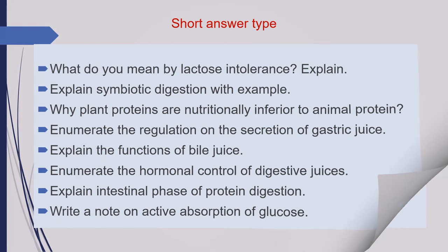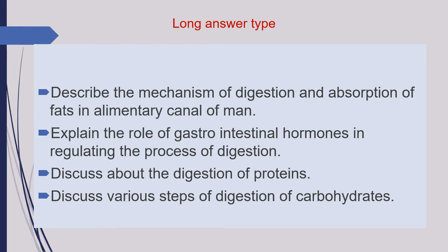The third category of questions are long answer type questions. The first question is: describe the mechanism of digestion and absorption of fat in the alimentary canal of man. Next is: explain the role of gastrointestinal hormones in regulating the process of digestion. Next is: discuss the digestion of proteins. And the last question is: discuss the various steps of digestion of carbohydrates.